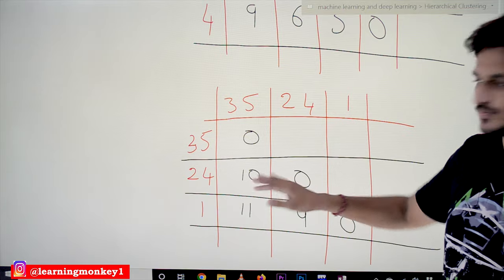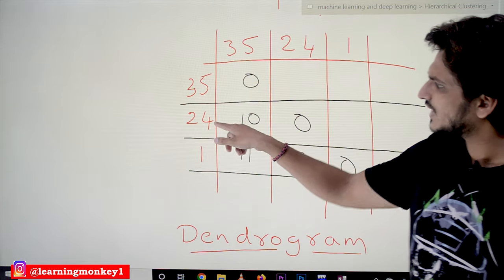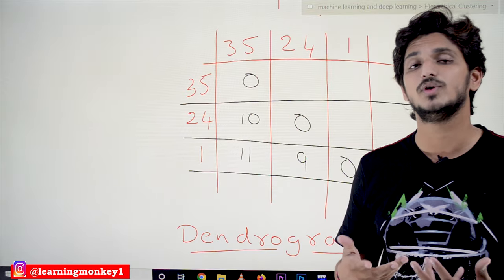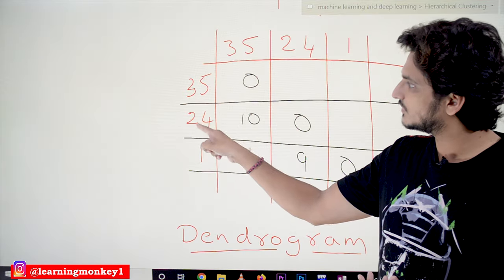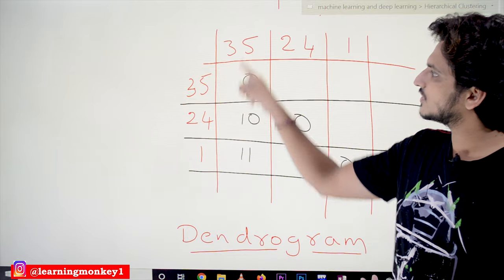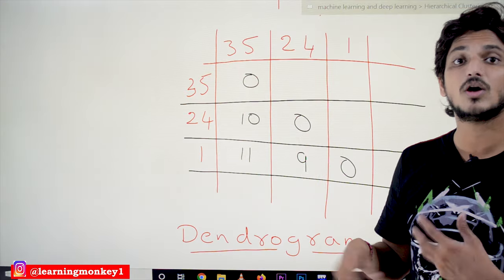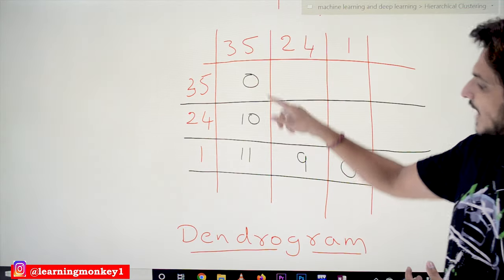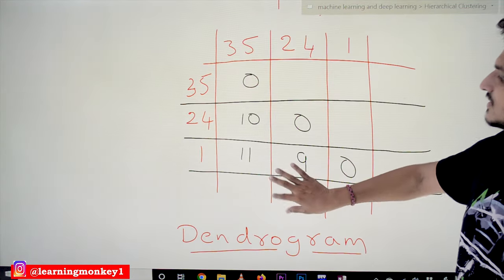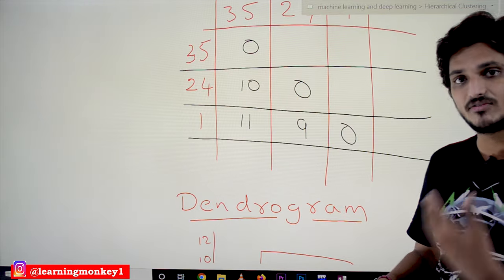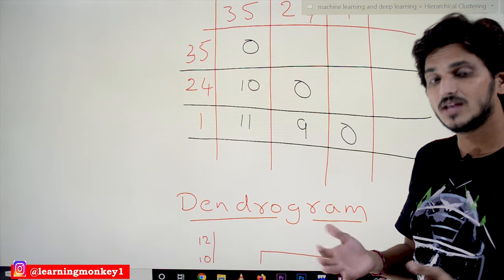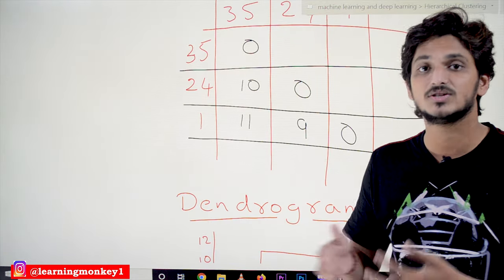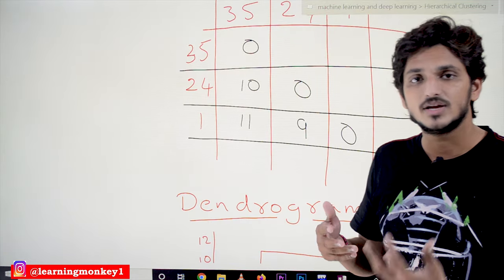Again we update the distance matrix. To calculate the distance between cluster (2,4) and cluster (3,5), we compute distances between 2 and 3, 2 and 5, 4 and 3, and 4 and 5, then pick the maximum. We repeat this process — update the matrix and identify the minimum distance — until we get a single cluster. This is how agglomerative clustering works.